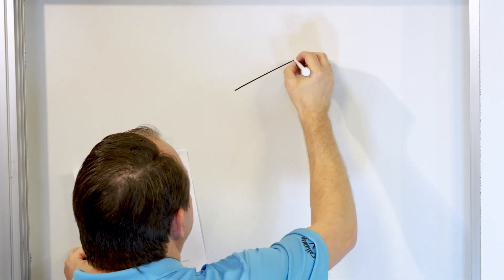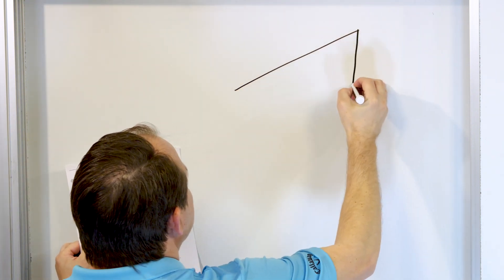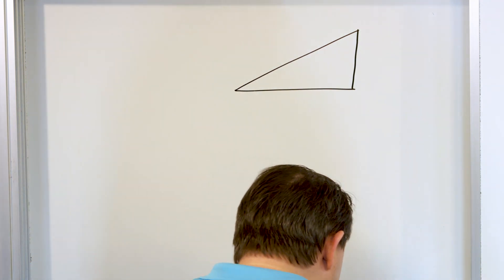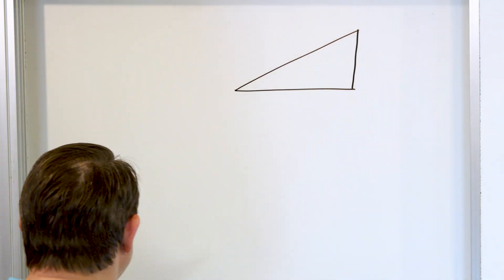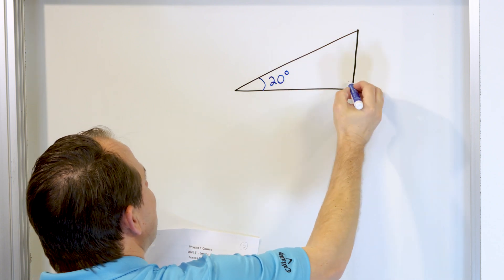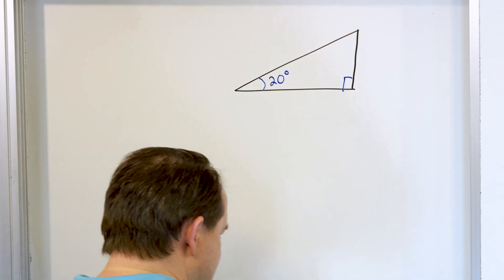So what we have here is a rope. I'm sorry, a ramp. Not a rope, a ramp. Here is a ramp. And we are told that this ramp has a slope of 20 degrees. So we've got to put that somewhere. So we'll put 20 degrees. Put a little right angle here if you want to. That's a ramp.